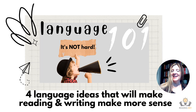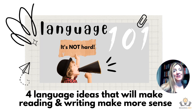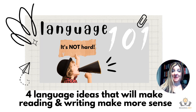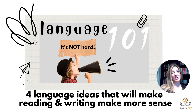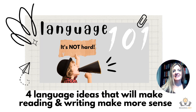Hi everyone, it's Bree from Reading Rev. As you know, we are doing a series on language comprehension this quarter. Our first blog was all about background knowledge, helping kids gain the background knowledge that will make reading comprehension accessible to them. The second blog was about vocabulary and systematically teaching vocabulary, especially tier two words. And today's blog is all about language and syntax, breaking down this complex idea of how words work together in a sentence into just four big ideas.